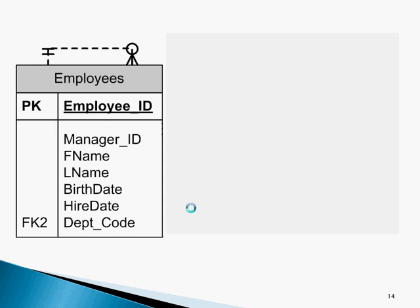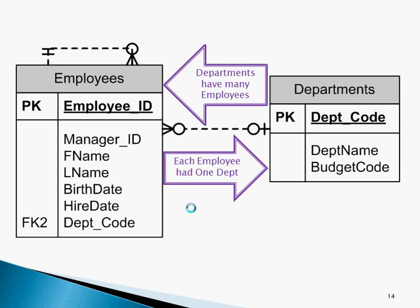The employee entity has a recursive relationship because managers are also employees. Thus, each employee is assigned to a manager and each manager may supervise many other employees. Here we can see the relationship between the employees entity and the departments entity. Each employee has one department and departments have many employees.